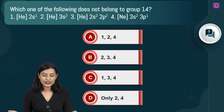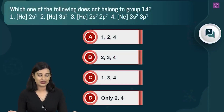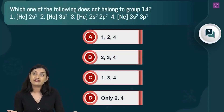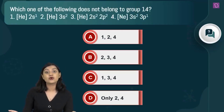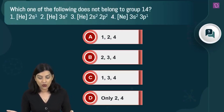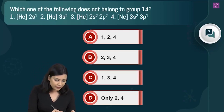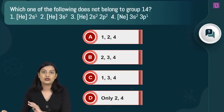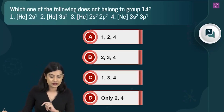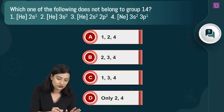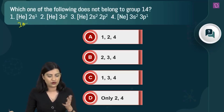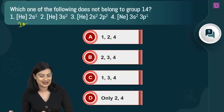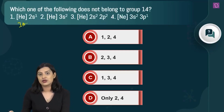The question asks which electronic configuration does not belong to group 14. Starting with helium 2s1: the full configuration is 1s2 2s1, which means this belongs to group 1 or alkali metals.